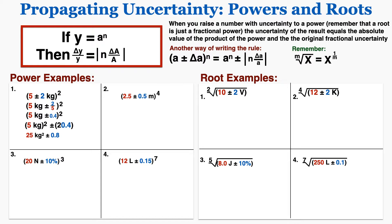Problem number two says 2.5 plus or minus 0.5 meters raised to the fourth. Again that's an absolute uncertainty and I need to convert it to fractional uncertainty, so I'll divide the uncertainty by the original number. The rule says that my new uncertainty will be the power multiplied by the fractional uncertainty, so I'm multiplying that fractional uncertainty by 4, and this is the answer that I get.